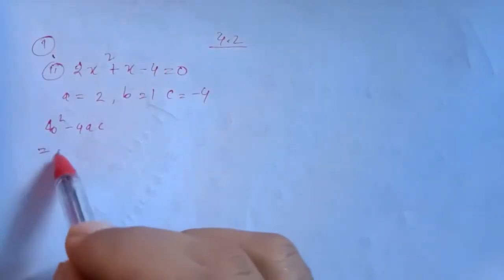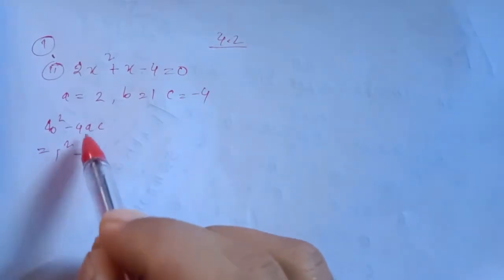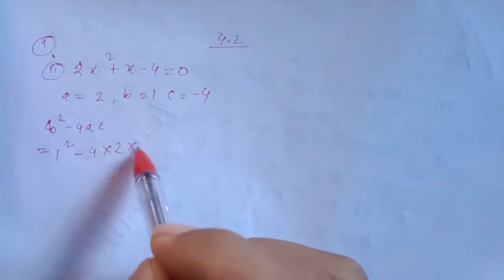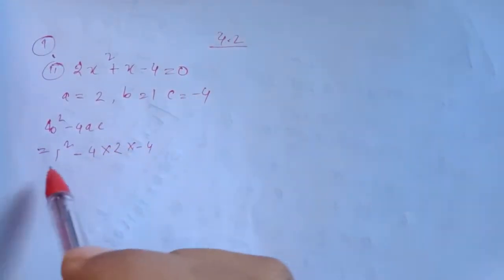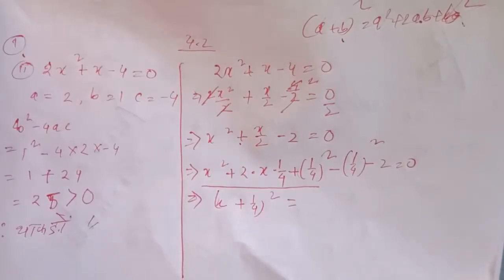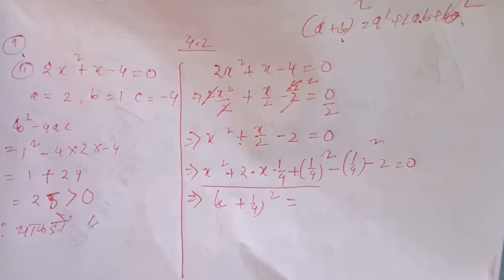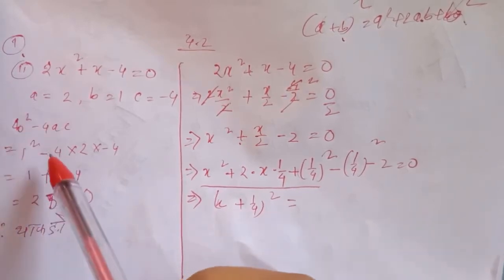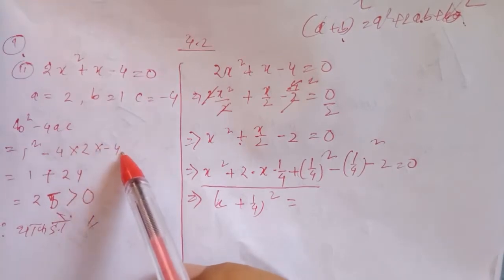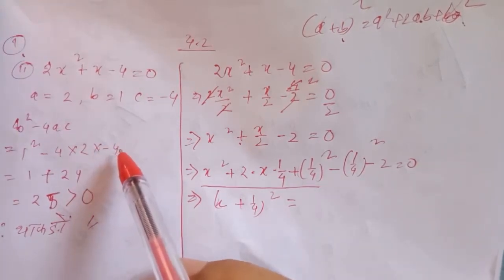B is 1, 1 squared. 4 is 4, A is 2, C is minus 4. So in this video we will see that 1 squared is minus 4.